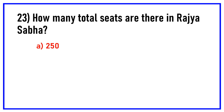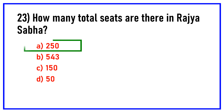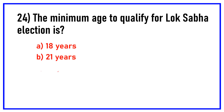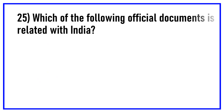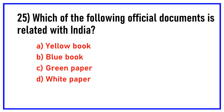How many total seats are there in Rajya Sabha? Options are: 250, 543, 150, 50. Answer: 250. The minimum age to qualify for Lok Sabha election is. Answer: 25 years. Which of the following official documents is related with India? Options are: yellow book, blue book, green paper, white paper. Answer: White paper.